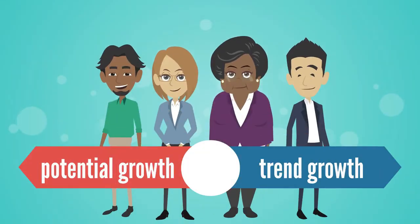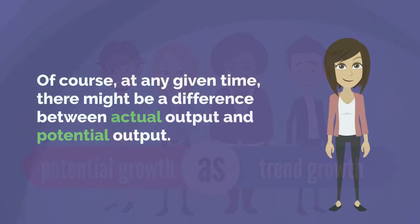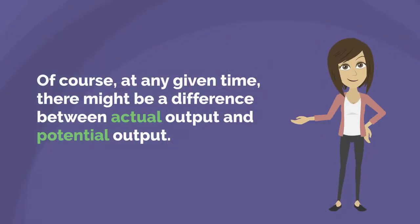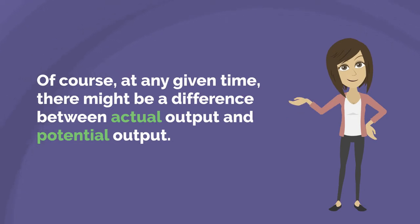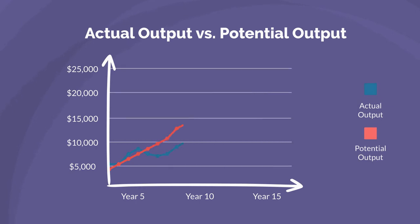Economists sometimes refer to the economy's potential growth rate as trend growth. At any given time there might be a difference between actual output and potential output. Although rare, it's possible for actual output to be higher than potential output, or above trend.